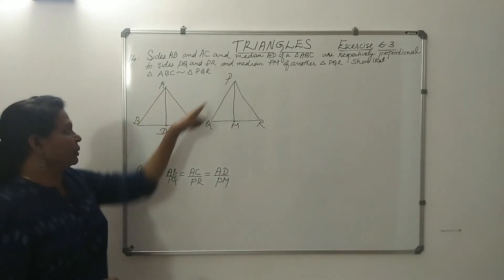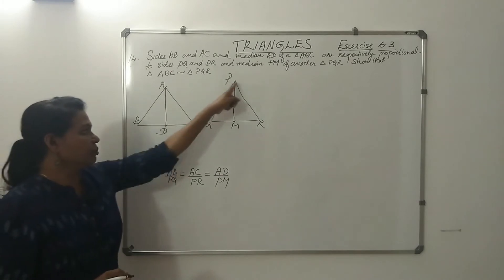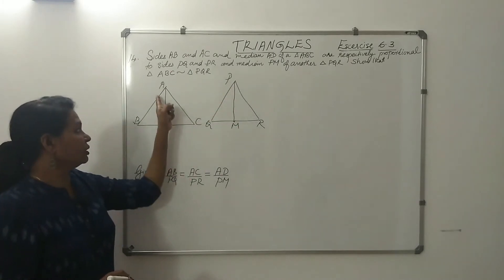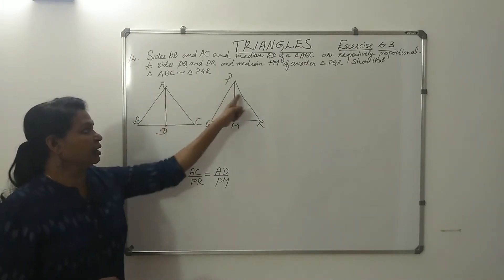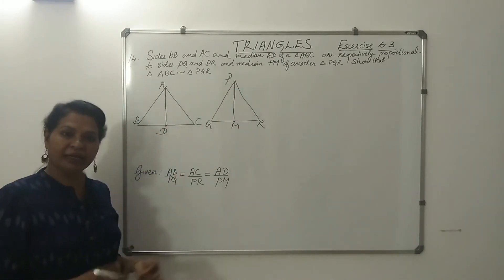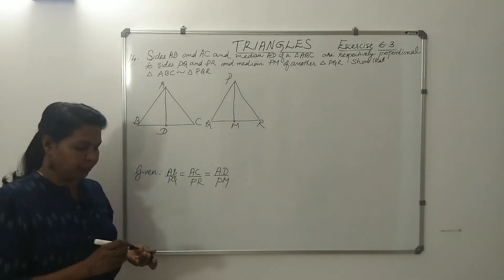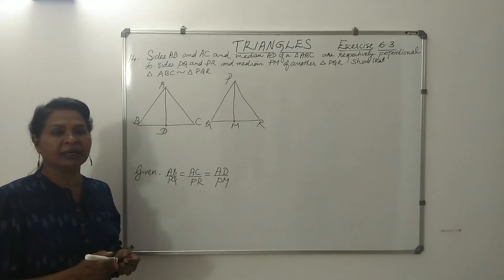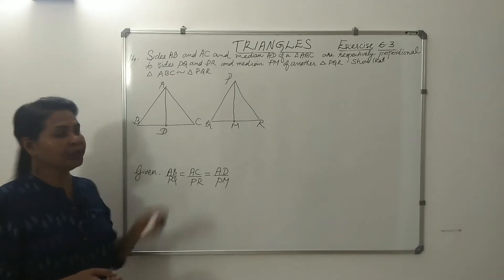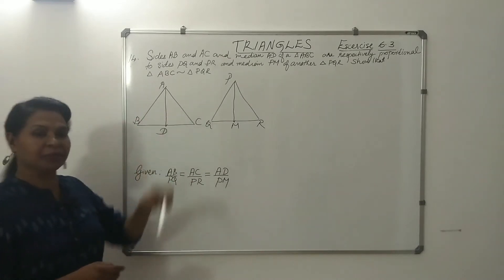AB by PQ equal to AC by PR. That is the included angle. That is, angle A equal to angle P. These two triangles are S-A-S similarity.